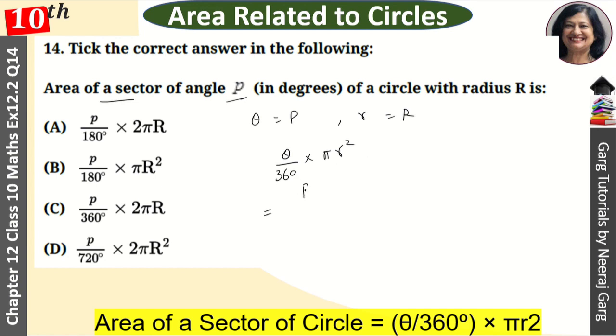Now, what is theta here? P upon 360 into πR². Now, there is no option here.